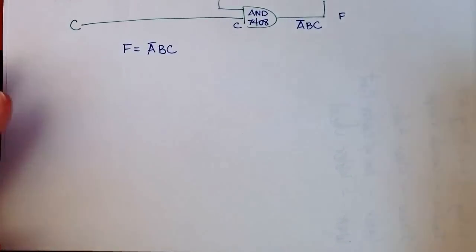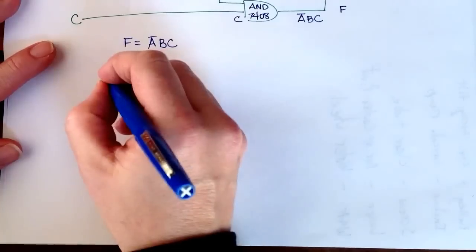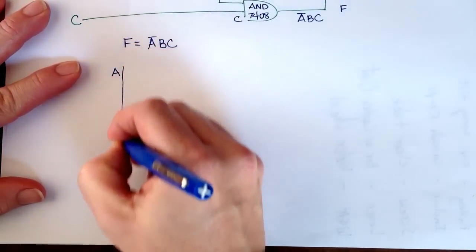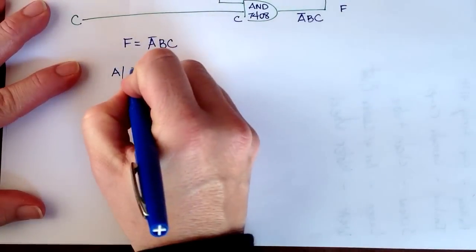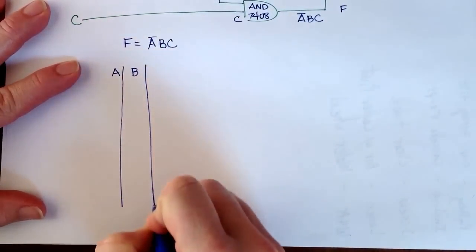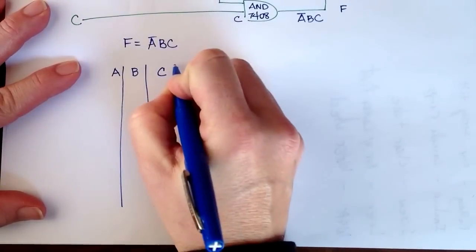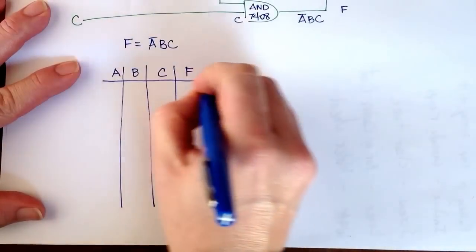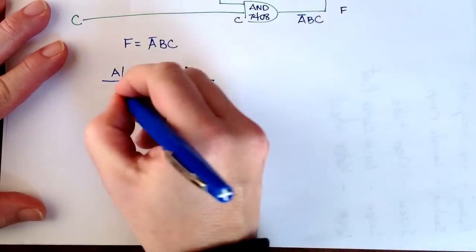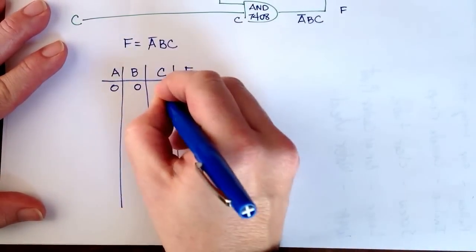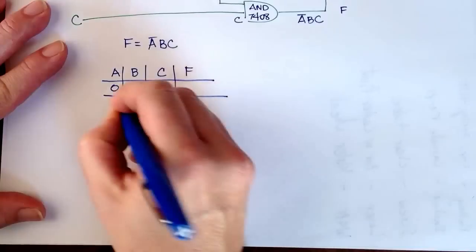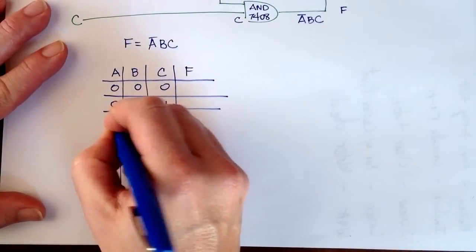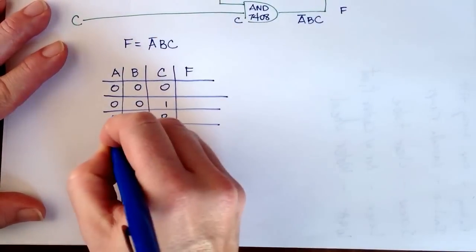Now we'd like to make a truth table for it. We have inputs A, B, and C, and our output F. We list all input combinations: 000, 001, 010, 011, 100, 101, 110, 111.